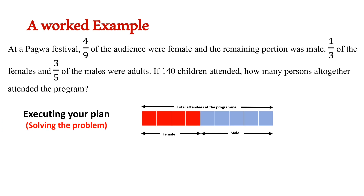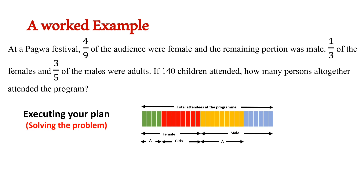They said that one-third of the females were adults. This means the four red strips must be divided into three equal parts. For convenience we will divide each of the blue strips into three parts also. Our revised model now shows that of the 12 red strips, four represent the female adults, and of the 15 blue strips, nine represent the male adults. Color coded, we have: female adults, girls, male adults, and boys.